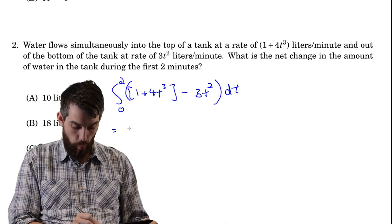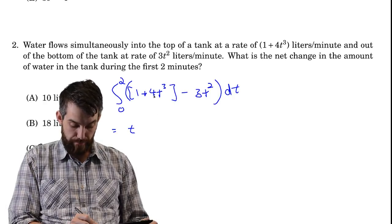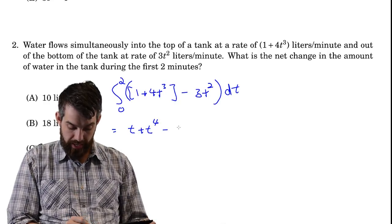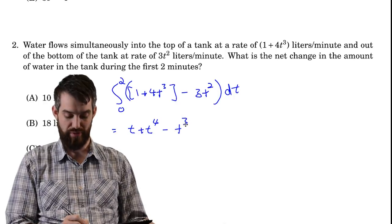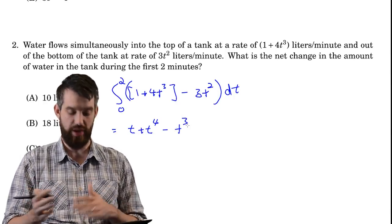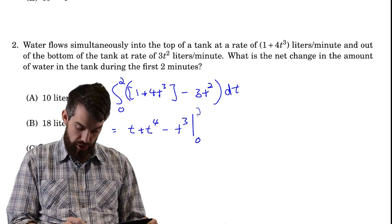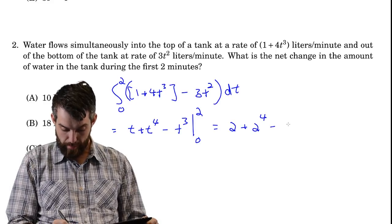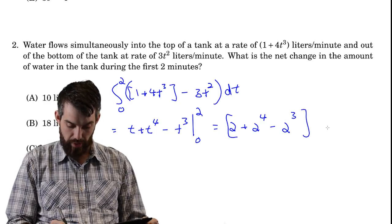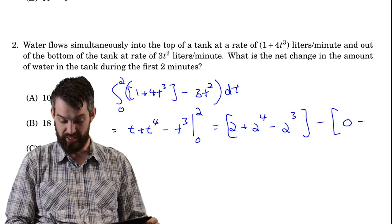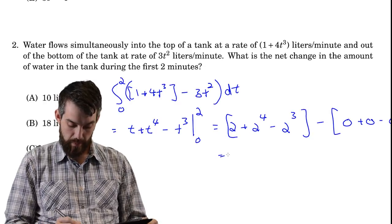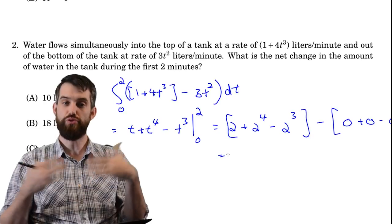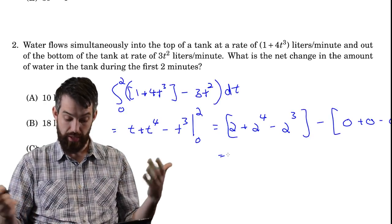Let's evaluate that. The antiderivative gives t plus t to the fourth minus t cubed, evaluated at 0 and 2. Plugging in 2: 2 plus 2 to the fourth minus 2 cubed. That's 2 plus 16 minus 8, equals 10. Subtracting the evaluation at 0, which is just 0, gives 10 liters. The units check out since the integrand is liters per minute integrated over time.